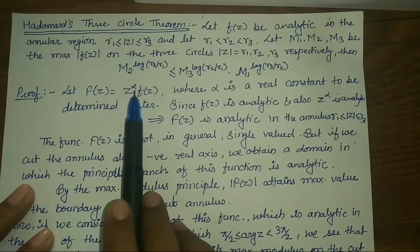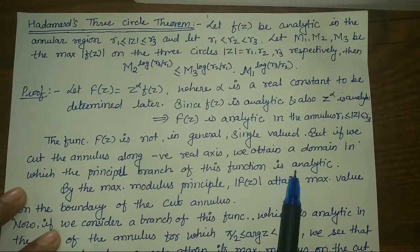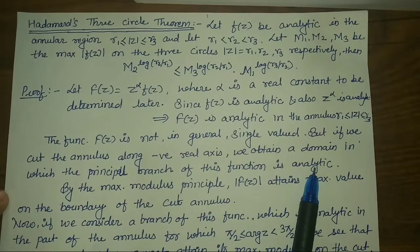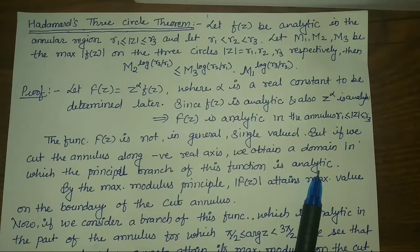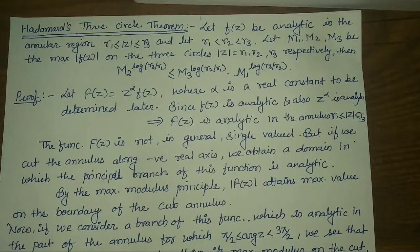Since, if alpha is not an integer, the function capital F(z) is a multi-valued function. So, for convenience, we cut the annulus along the negative real axis. We obtain a domain in which the principal branch of this function is analytic. Here we are using a branch cut so that our function is converted from multi-valued to single-valued. The branch cut is a boundary introduced so that the corresponding branch is single-valued and regular throughout the cut plane.